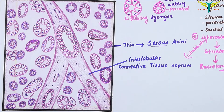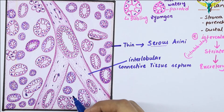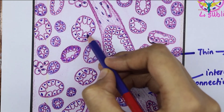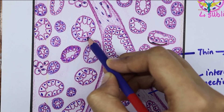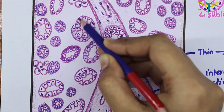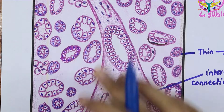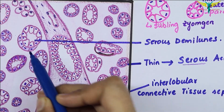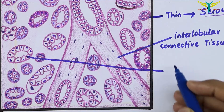Some serous cells are frequently located at the periphery of the mucous acini in the form of a crescent shape, and these are called demilunes. You can see the mucous acini here, with some serous cells present in crescent shape towards the periphery — this is called the serous demilune. So this is the mucous acini with a serous demilune.